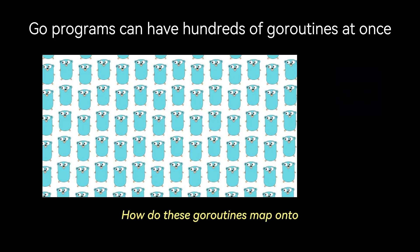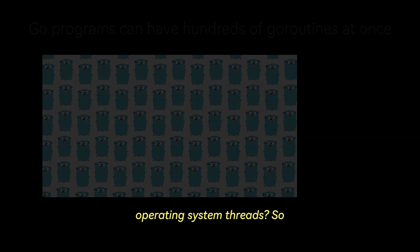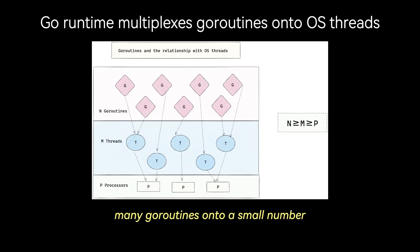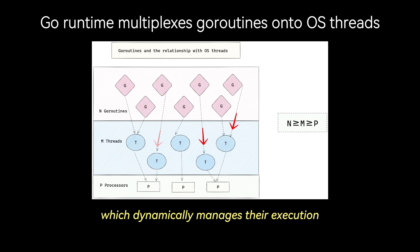You might be curious how goroutines map onto operating system threads. The Go runtime scheduler is responsible for multiplexing many goroutines onto a small number of OS threads, which dynamically manages their execution.